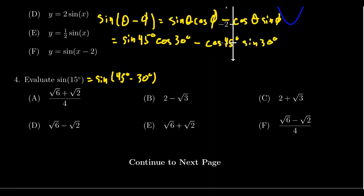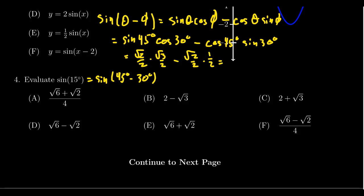Sine and cosine at 45 degrees are both root 2 over 2. Cosine at 30 degrees is root 3 over 2. And cosine of 45 degrees is root 2 over 2, and sine at 30 degrees is 1 half. Multiplying these together, the square root of 2 times the square root of 3 gives the square root of 6, over 2 times 2, which is 4.